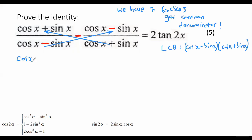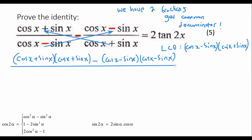You're going to get cos x plus sin x multiplied by cos x plus sin x minus cos x minus sin x multiplied by cos x minus sin x, all over the common denominator, which is cos x minus sin x times cos x plus sin x.